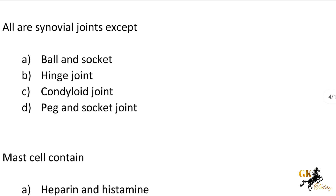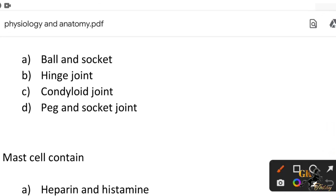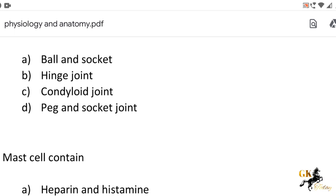Next question: All are synovial joints except — Option A: Ball and socket. Option B: Hinge joint. Option C: Condyloid joint. Option D: Peg and socket joint. The answer is Option D: Peg and socket joint.